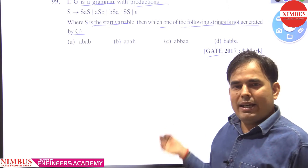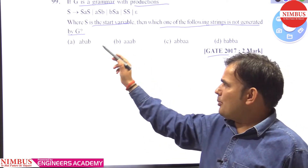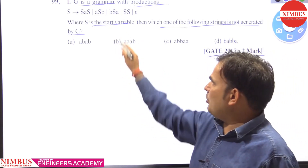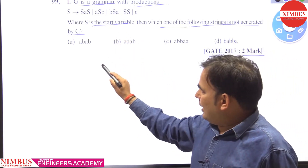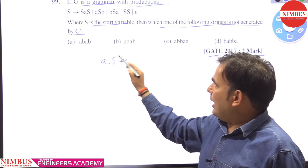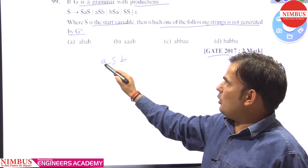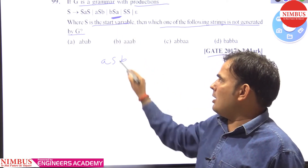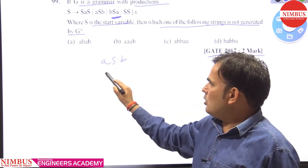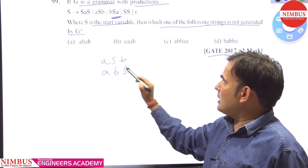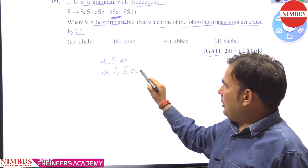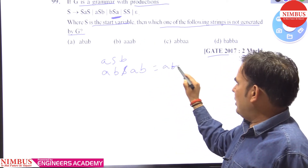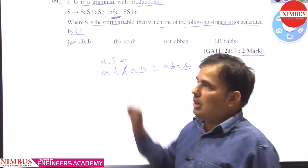Let's go through the options and check if each string is derived by the given grammar. For option A, if we take S → A S B, then replace S again with A S B, we get A B S A B. Replacing this S with epsilon, we get A B A B. So yes, ABAB is generated by this grammar.